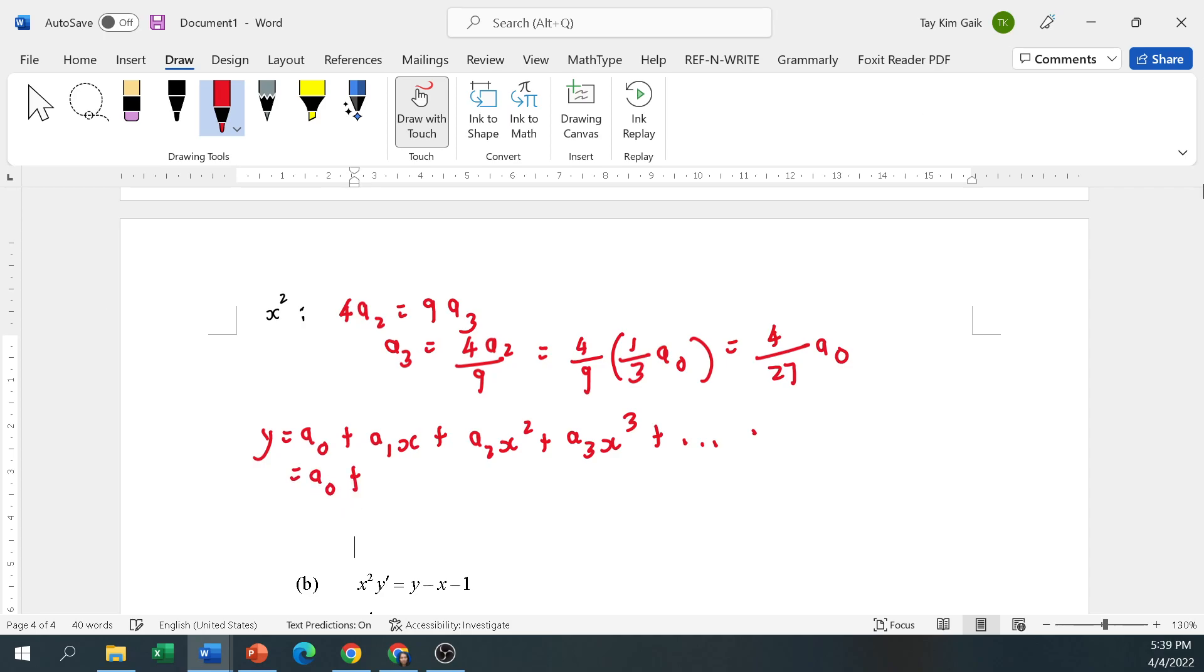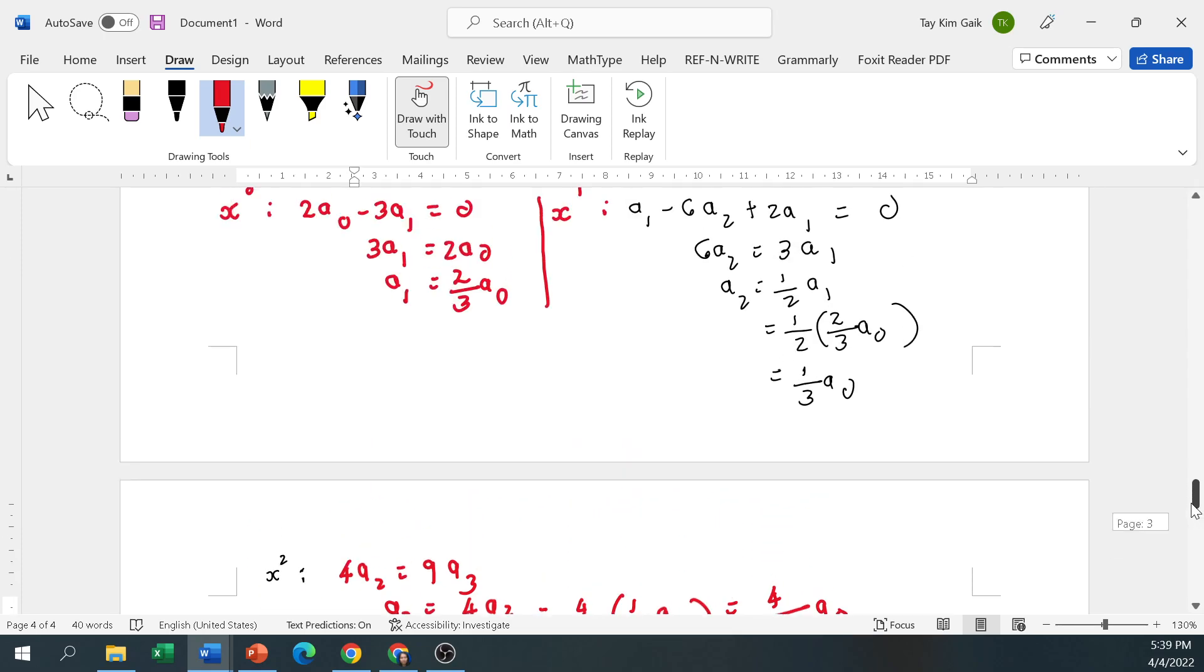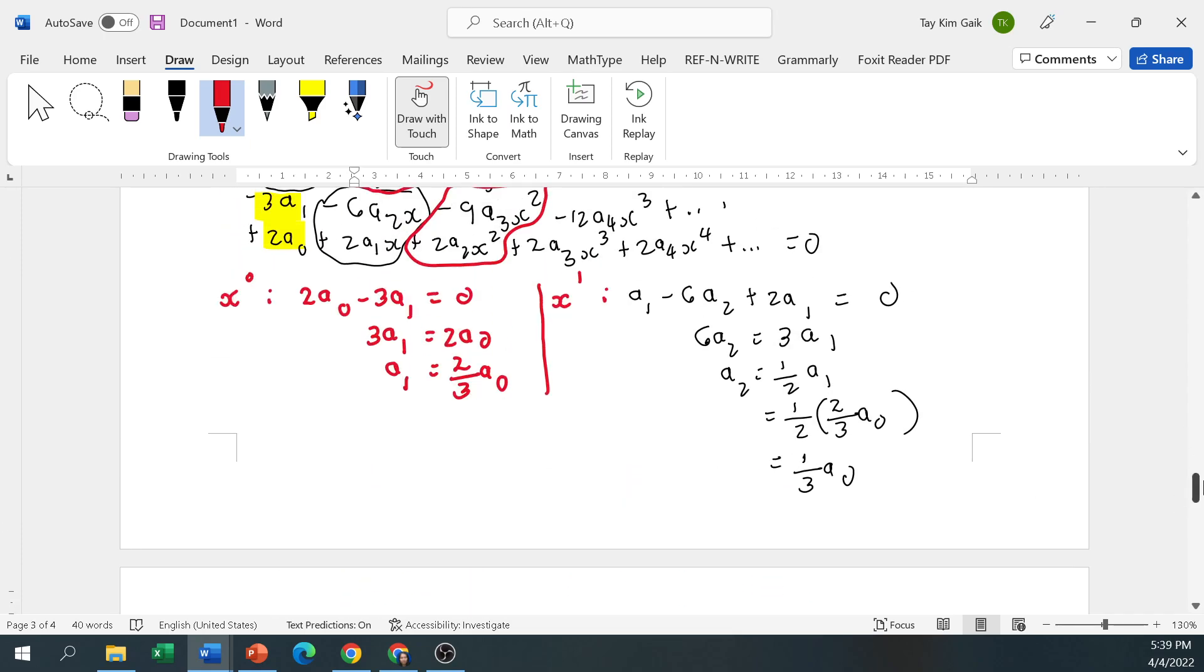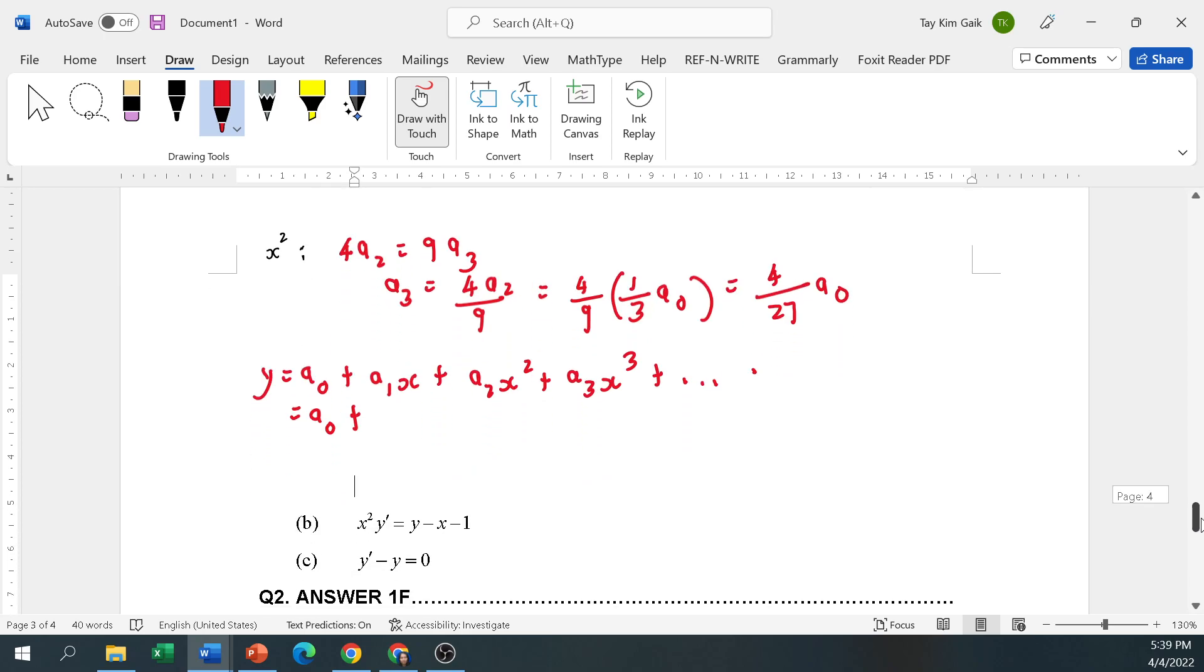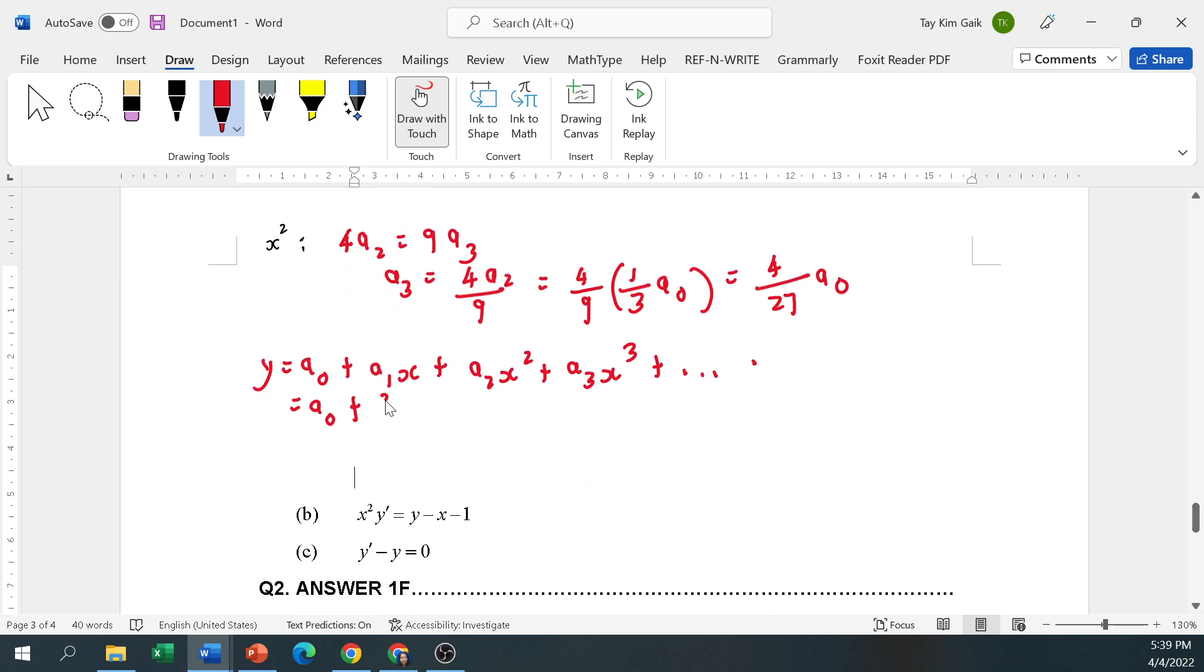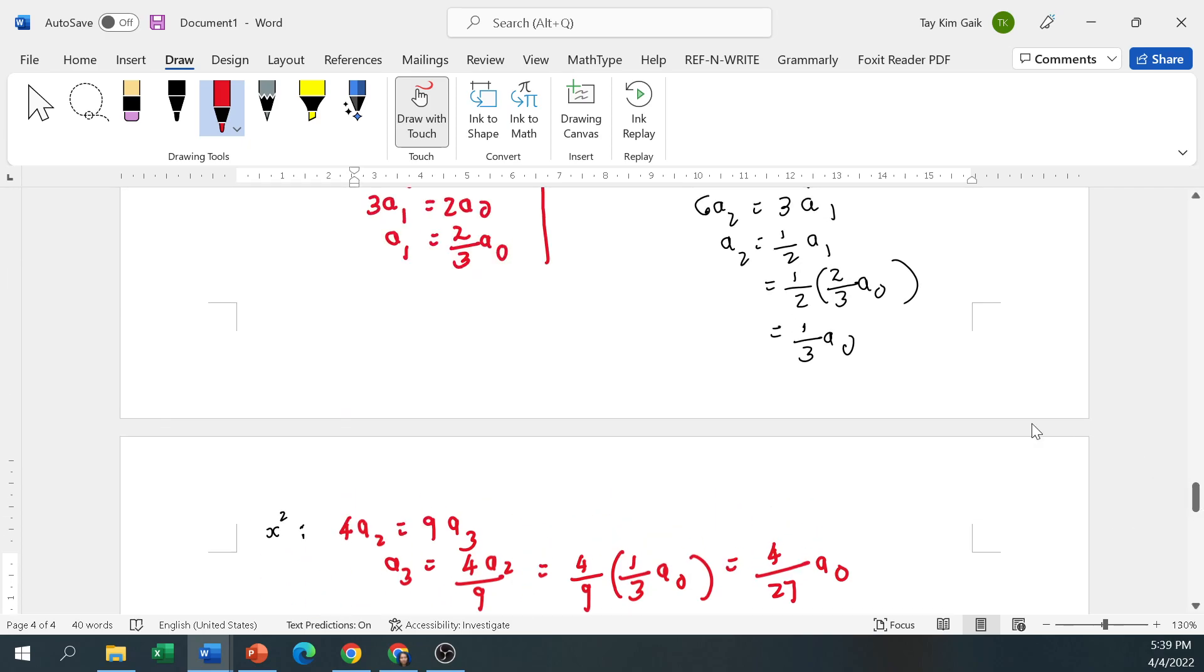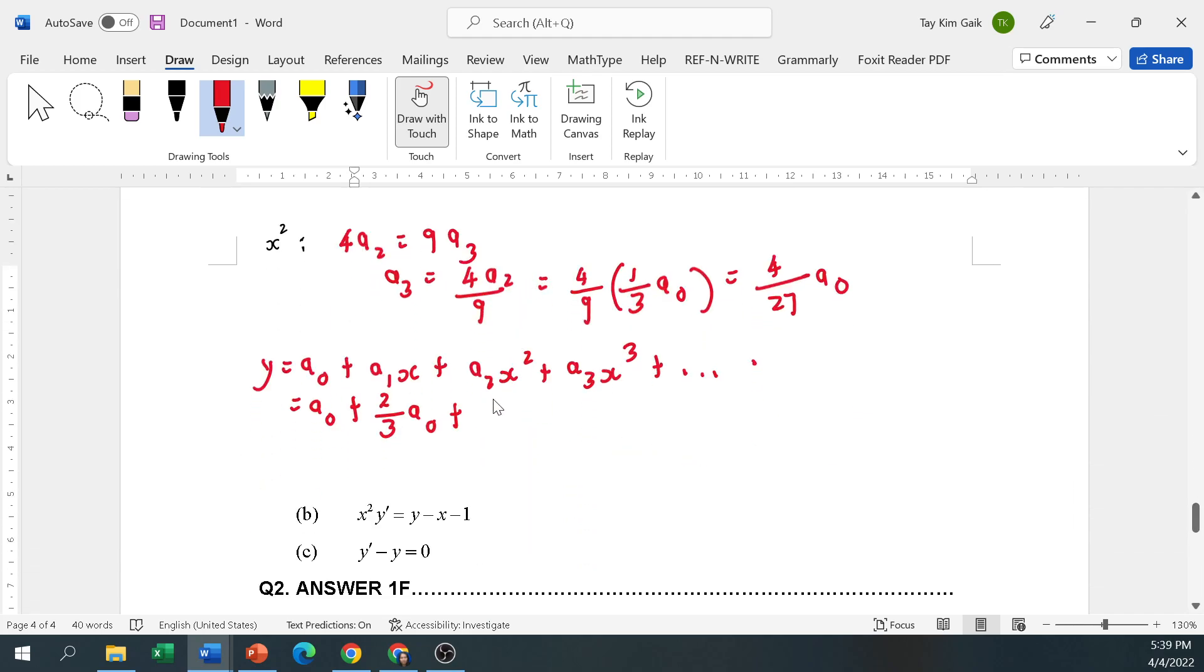Okay, so the solution was in terms of a0. So a1 is 2 thirds a0. a2, 1 third a0. a3 here, 4 over 27 a0.